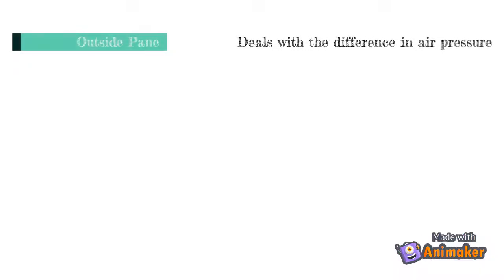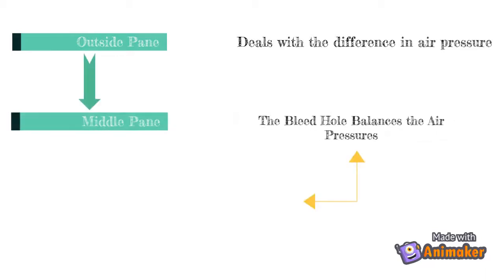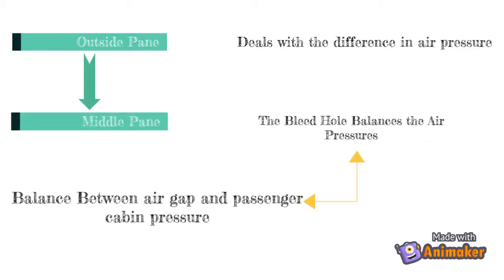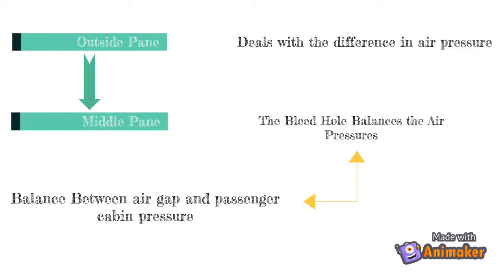The outer pane deals with the difference in air pressure. Through the tiny hole in the middle pane, called the bleed hole, the main purpose is to balance the air pressure. There is also a small gap between the inner and outer panes, and the bleed hole allows pressure to maintain balance between the air gap and the passenger cabin.